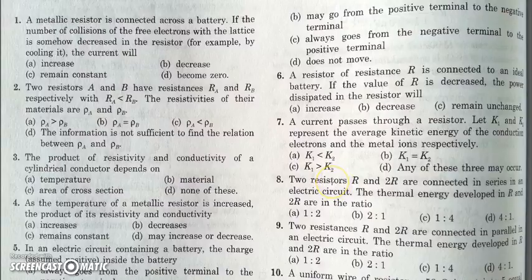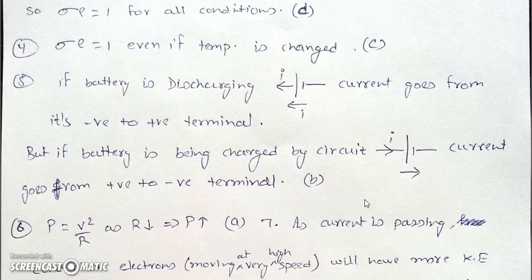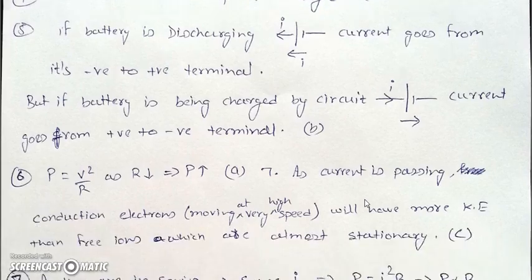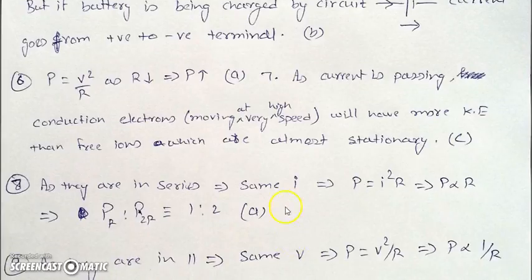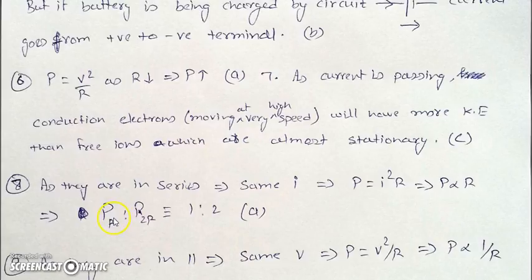In the next question, two resistances R and 2R are connected in series. We need to find the ratio of their thermal power. Since they are in series, the current through both is the same. Power equals I²R, and since I is the same, power is simply proportional to R. So the ratio of resistance equals the ratio of power: P_R to P_2R is 1 to 2.